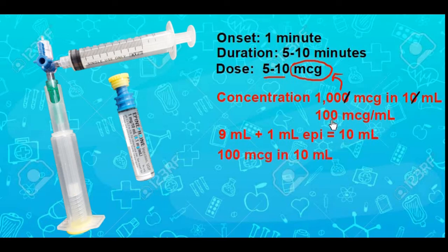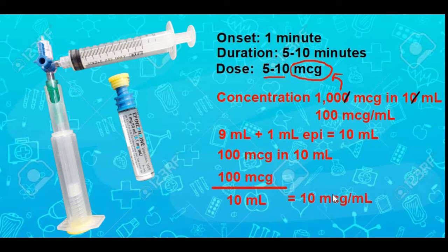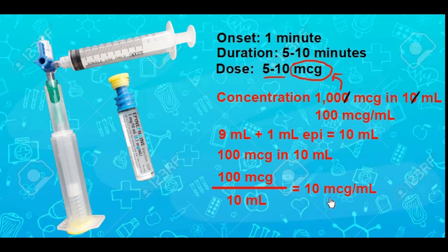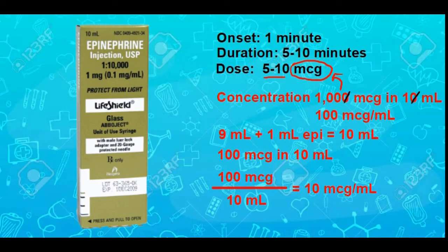The concentration is one hundred micrograms in ten milliliters. If we divide one hundred micrograms by ten milliliters, we get a final concentration of ten micrograms per milliliter. That works for us because we're trying to give a dose of five to ten micrograms. To give a ten microgram dose, you give one milliliter of that diluted epinephrine. For a five microgram dose, you cut it in half and give one half milliliter. That ten cc syringe has enough doses to get you pretty far down the road.